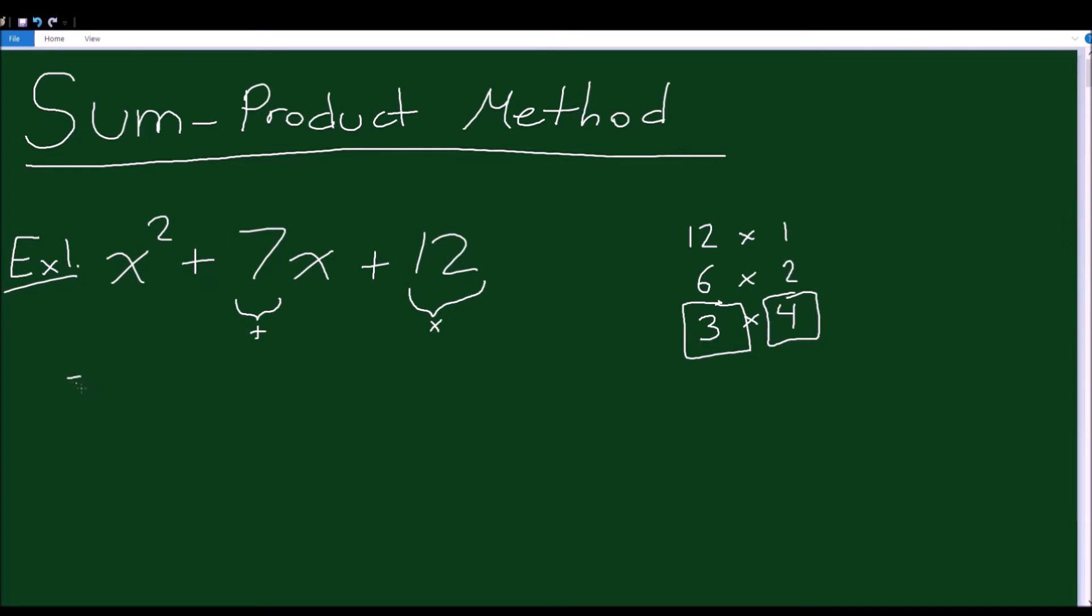All right, so what do we do? This is what's nice about the sum-product method. It's actually really simple. Set up your brackets like this: 1 bracket, 2 bracket, and you have these two terms, 3 and 4. So you write (x + 3) and (x + 4). And that's it. This is your final answer. This is the factored form of this trinomial.